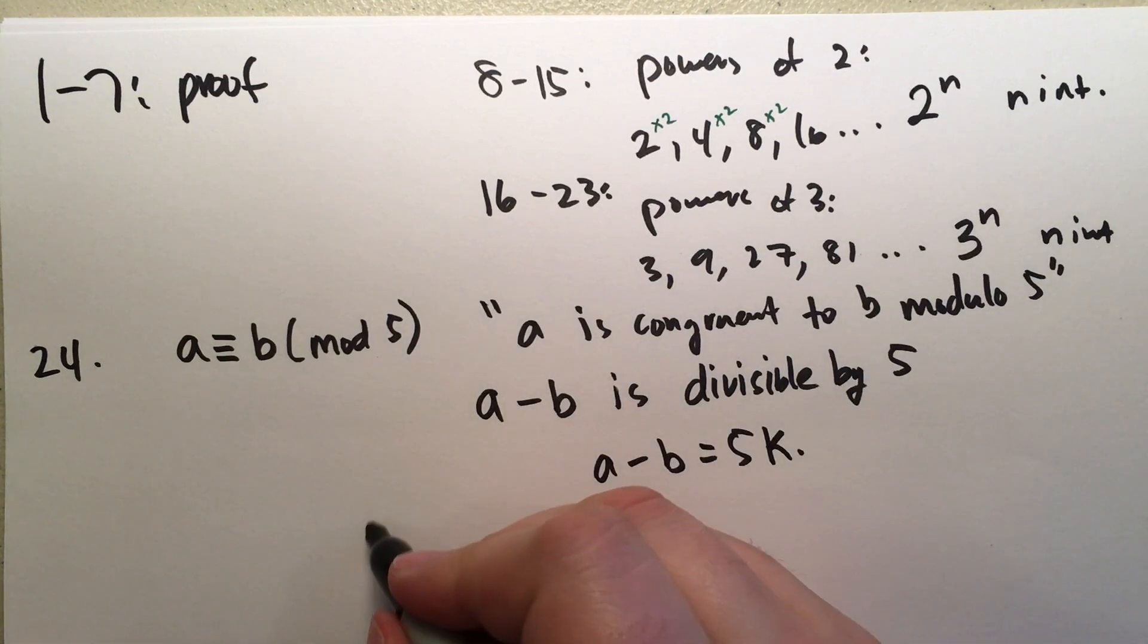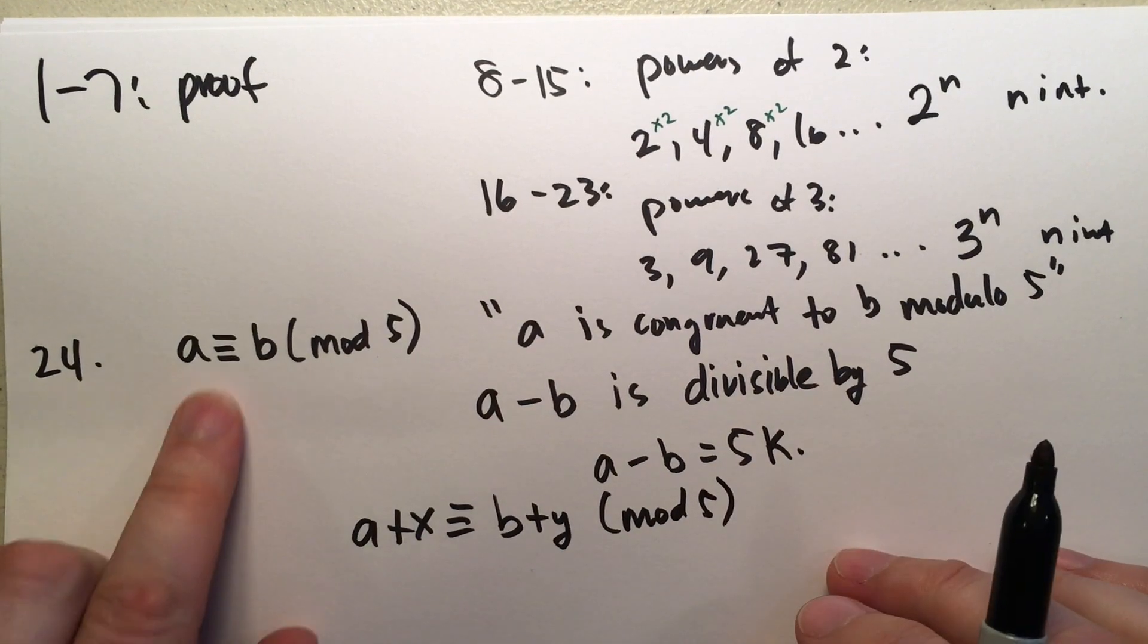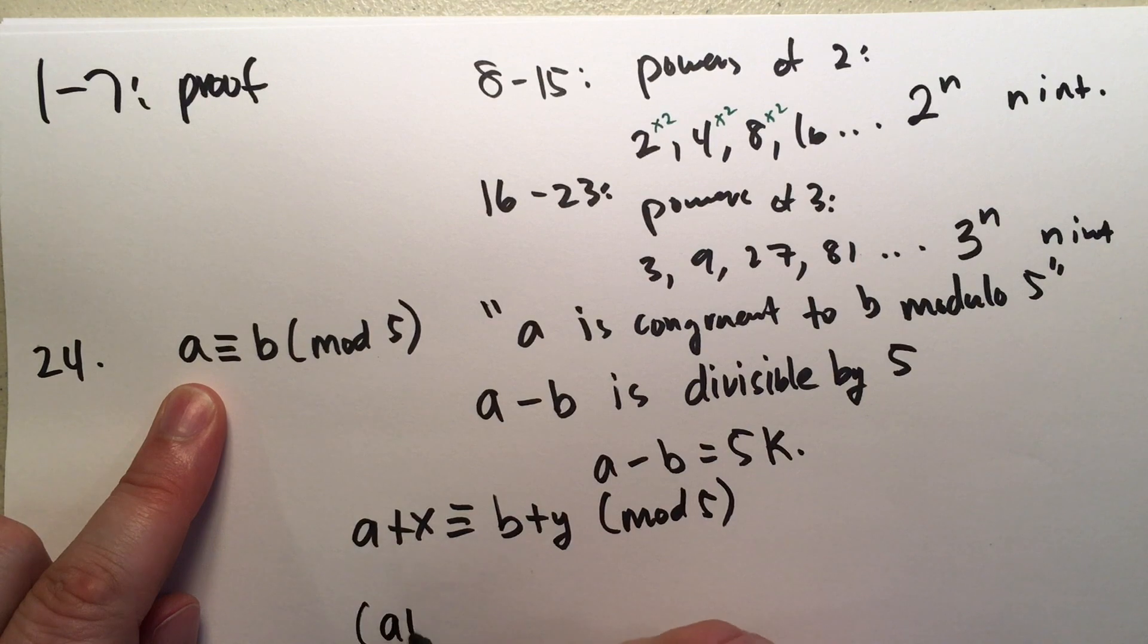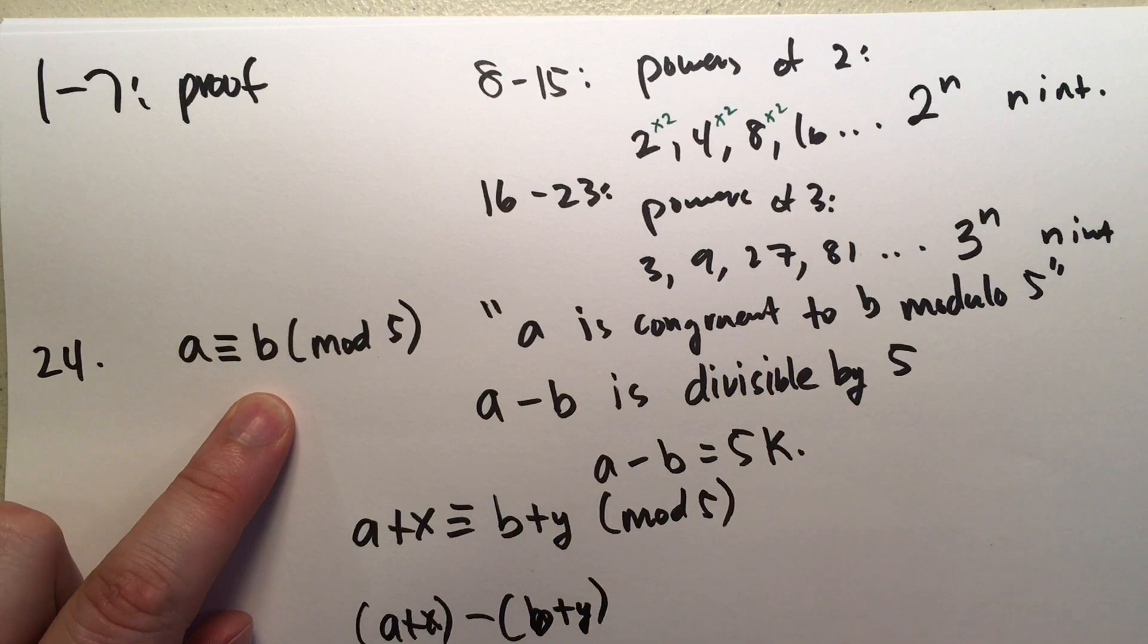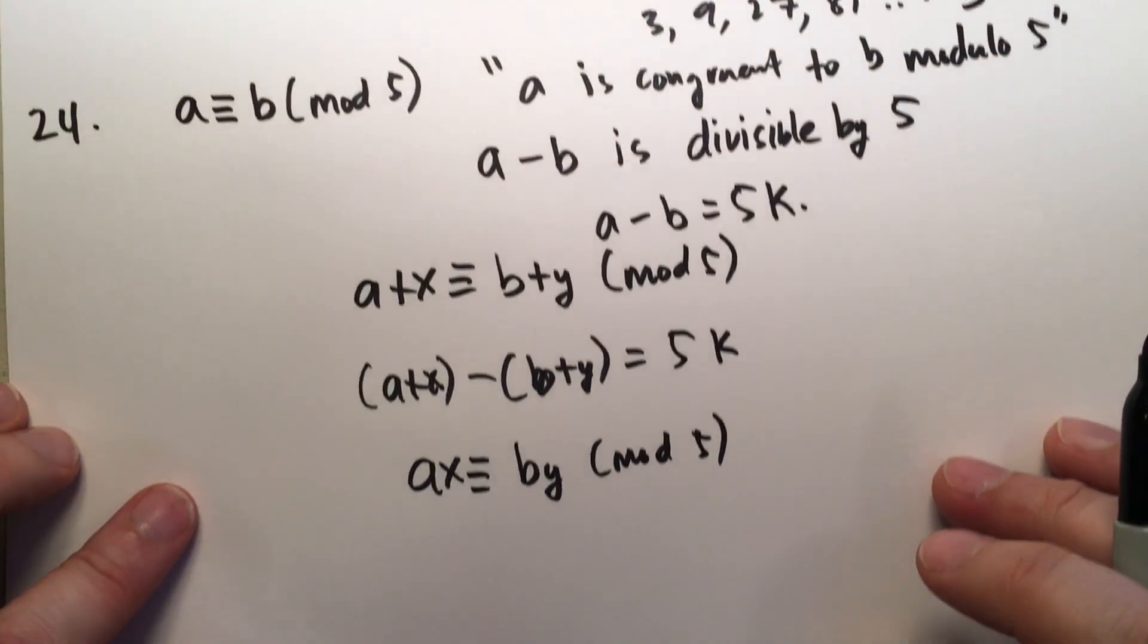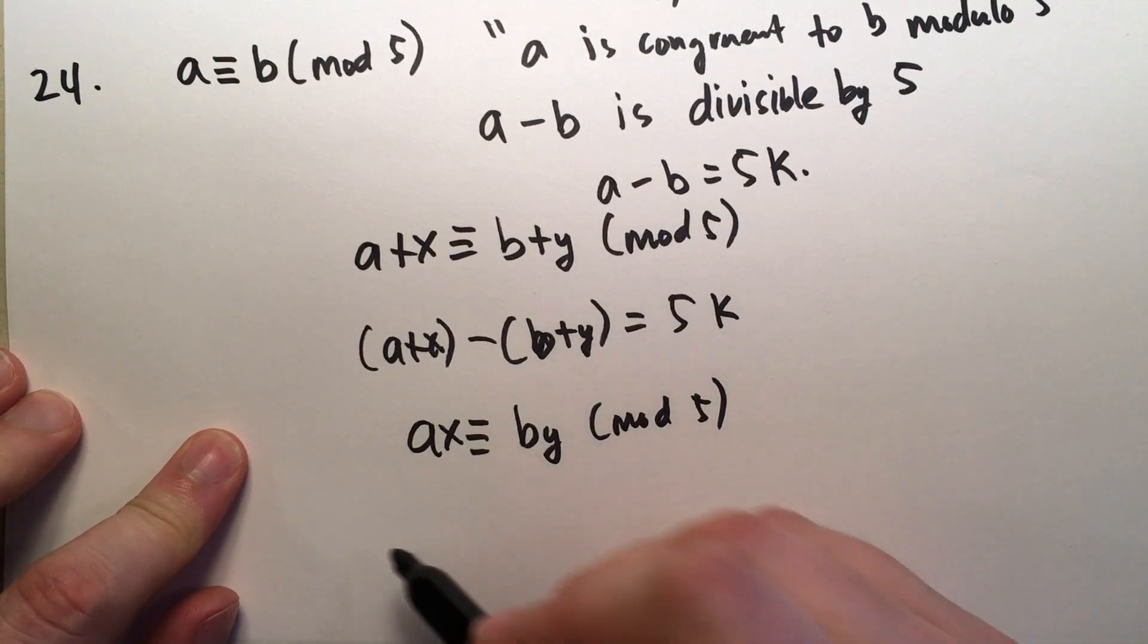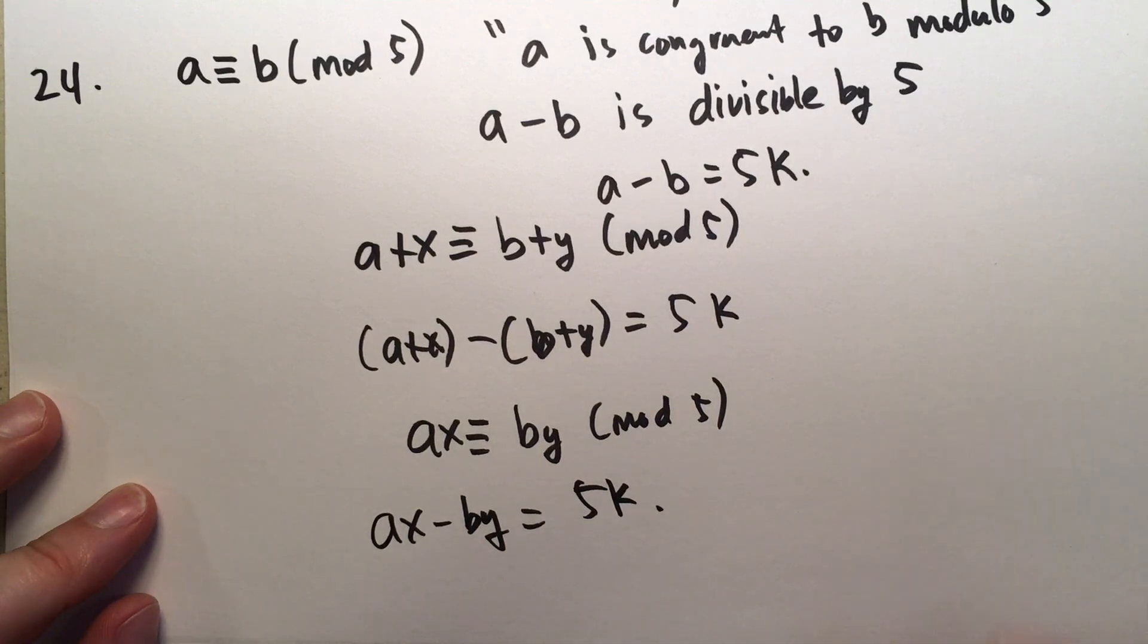Now, when he writes out a plus x is congruent to b plus y mod five, well, your left-hand side is a plus x. You take a plus x, subtract the other side minus b plus y and it has to be divisible by five. So, five k. And when he says a x is congruent to b y mod five, you just write a x minus b y equals five k. And then you solve that as normally. Twenty-five, you're using d instead of five.